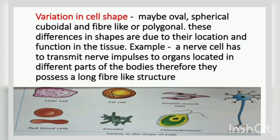Red blood cells are round or spherical in shape. Fat cells, which are used to store fat, are also spherical. However, the nerve cell is a long fiber-like structure because of its function — it has to transmit nerve impulses to organs located in different parts of the body, which is why it needs to be long. So depending upon their location and function, cell shape can vary.